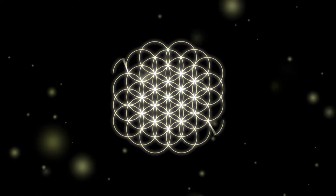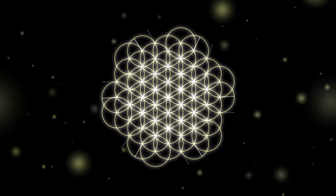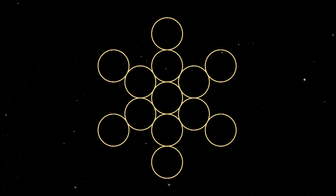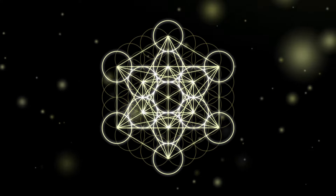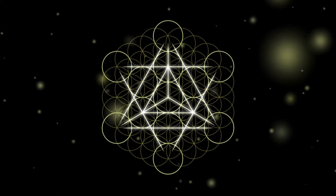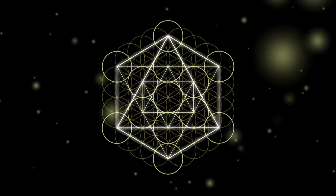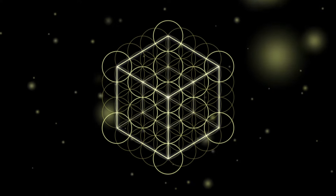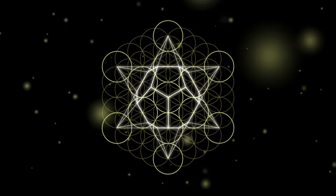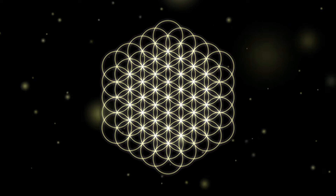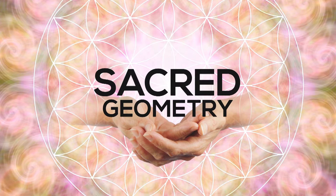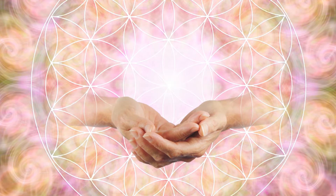When looked at carefully, multiple shapes and symbols can be seen within the overall pattern, including the egg of life, seed of life, the fruit of life, the tree of life, Metatron's cube, and the five platonic solids. All these shapes are fundamental to sacred geometry, which refers to repeating geometric patterns found in nature. Sacred geometry symbols can be explained scientifically, but are believed to be evidence of intelligent design by a higher power for those who believe in the spiritual aspect of geometry. The Flower of Life is believed to be one of the first sacred geometry shapes and possibly the most important.